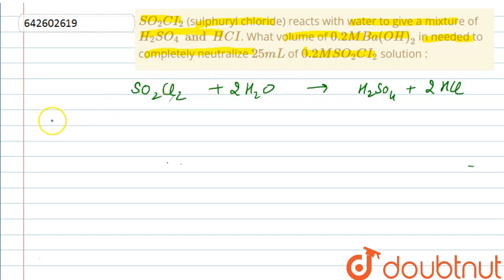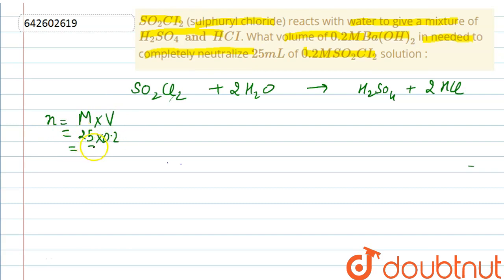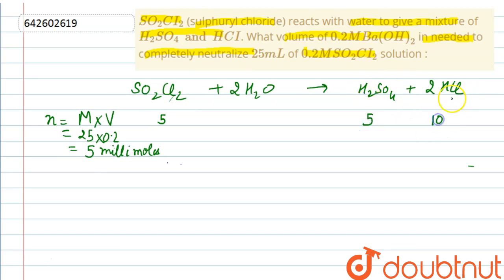Next, we find the number of moles of SO₂Cl₂. Number of moles = molarity × volume = 25 mL × 0.2 M = 5 millimoles. According to stoichiometry, 5 millimoles of SO₂Cl₂ will give 5 millimoles of H₂SO₄ and 10 millimoles of HCl.